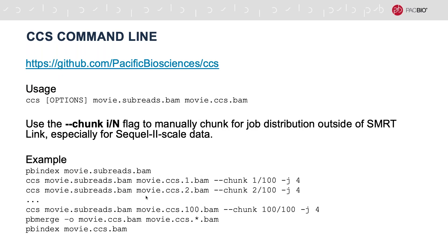CCS analysis is straightforward — provide the subreads BAM (the native format for Sequel and Sequel 2 data) and produce a CCS BAM with unaligned error-corrected reads. For Sequel 2 data, I recommend chunking up this analysis using the flag --chunk for efficiency. In this example I've chunked it into 100 different chunks, each using four threads. Index the BAM beforehand, then merge and index the resulting BAM at the end. CCS is performed per ZMW, making it very parallelizable.